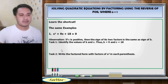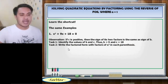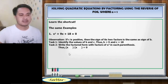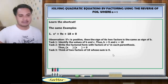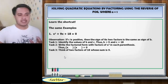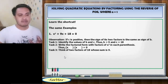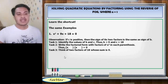Next, Task 2: Write the factored form with factors of x in each parenthesis. Task 3: Think of two factors of 18 whose sum is 9. If we think it properly, it will come to mind that the two factors of 18 with a sum of 9 are 3 and 6.